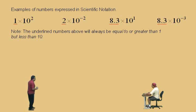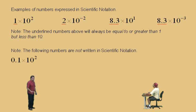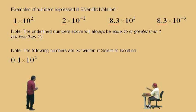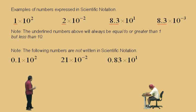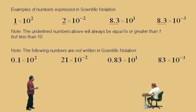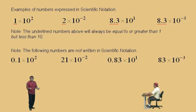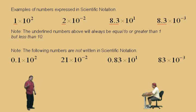Here are some numbers that are not written in beginning algebra format for scientific notation. Point one times ten squared — point one is less than one, we don't want that. Twenty-one times ten to the negative two — twenty-one is bigger than ten, we don't want that. Zero point eight three is less than one, and eighty-three times ten to the negative three — eighty-three is bigger than ten. Remember, for proper scientific notation, the numbers have to be between one and ten, or equal to one.